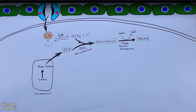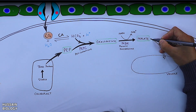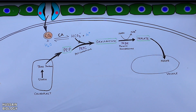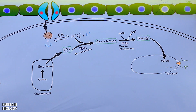This oxaloacetate is then acted upon by malate dehydrogenase enzyme with NADH. NADH, being the reducing agent, reduces oxaloacetate to malate and NAD⁺. This malate is the main source of carbon dioxide within the mesophyll cell and is stored in the vacuole during the night time. A proton is also transported into the vacuole via an ATP-driven proton pump. This concludes the night reactions.